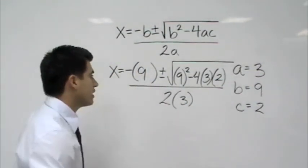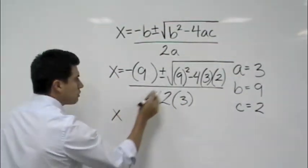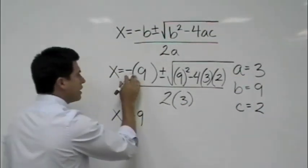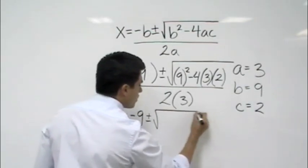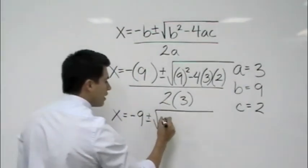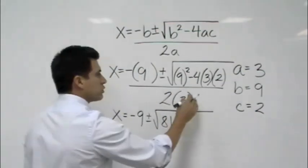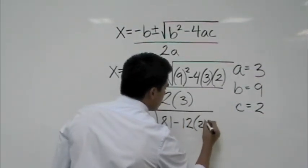Once you do that, you just simplify everything. So first, I'm going to go ahead and multiply that 9 squared. So x equals negative 9, because that would be a negative 9, plus or minus the square root of 9 squared. So that would be 81 minus, and you can multiply one of the terms as well in here. Negative 4 times 3 would give me a negative 12 times 2,